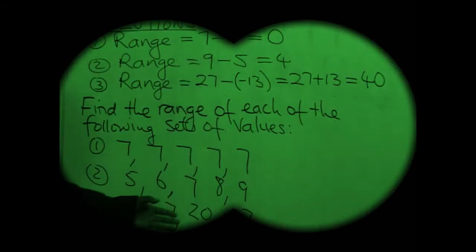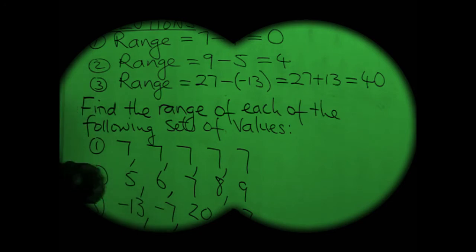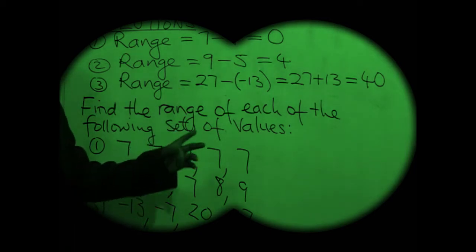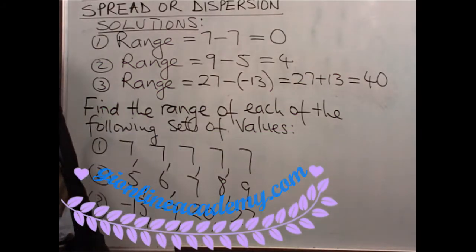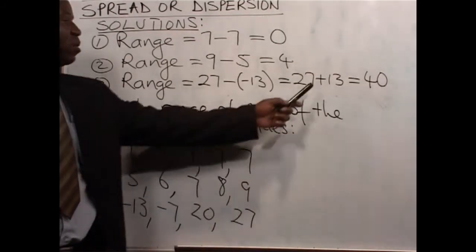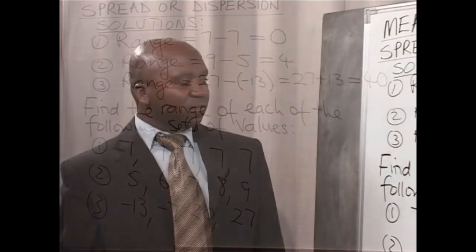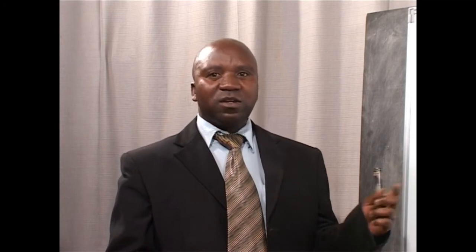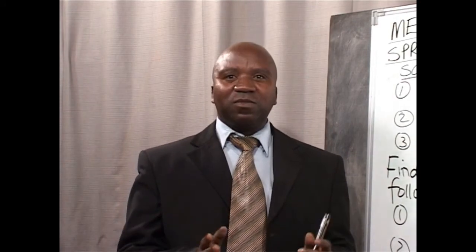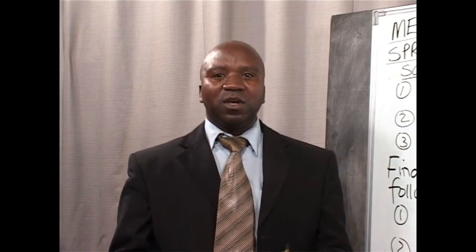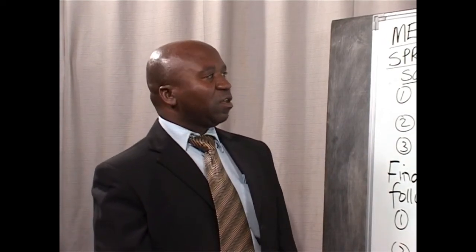The third example can even relate to temperature in some very cold countries, where maybe during the day the temperature can go as high as 10, and in the night it goes very low, below zero. To find the range, you subtract the highest minus the lowest, as we have done. The minus minus with integers will give a positive value, and that will be the range. So always remember, when you are given a set of values, you have to calculate the difference between the highest and the lowest.